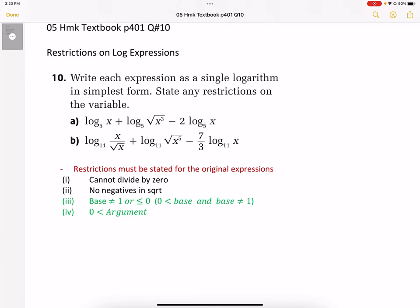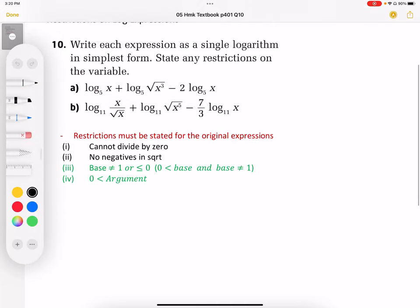So taking a look at A, we have our restrictions are going to be based on the argument. So this argument here, this argument here must be bigger than zero. Same thing here, this must be bigger than zero. It also has to be bigger, it can't be negative, but that bigger than zero accounts for that. And this must be bigger than zero as well.